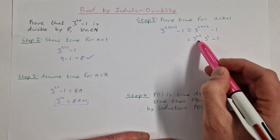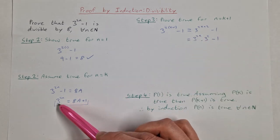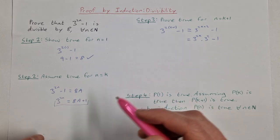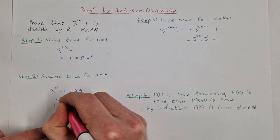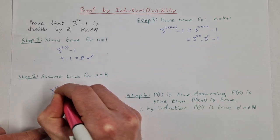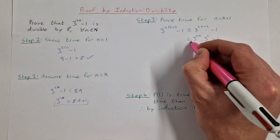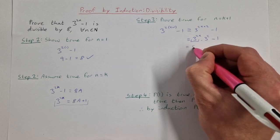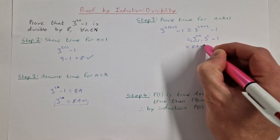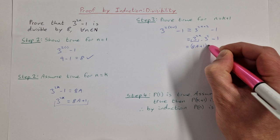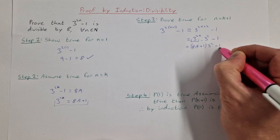Now 3 to the power of 2k, I can rewrite that because 3 to the power of 2k up here equals 8a plus 1. So instead of that, I can write (8a + 1) multiplied by 3 squared, minus 1.